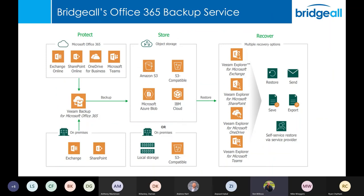For our 365 backup service, we back up Exchange data, SharePoint Online, OneDrive, and Teams. Data can be moved to multiple cloud areas or to on-premise or private data centre storage. We are able to restore at a granular level — directing restores to Exchange mailboxes or SharePoint libraries without needing to do an entire restore — so it works quite granularly.